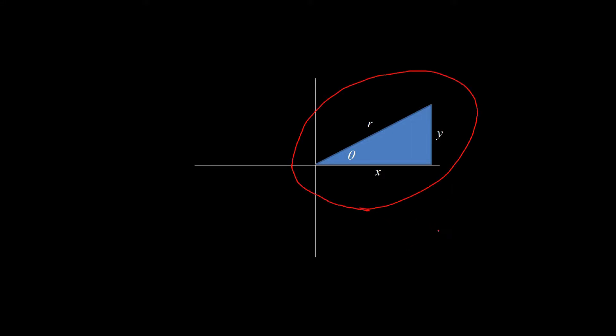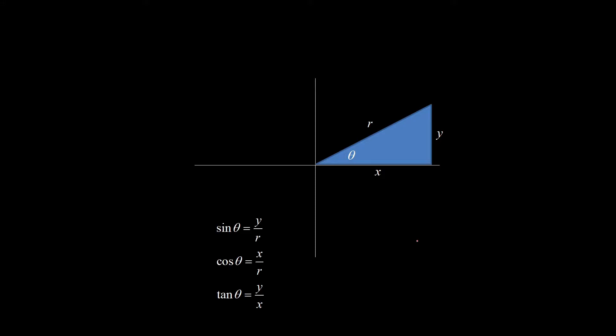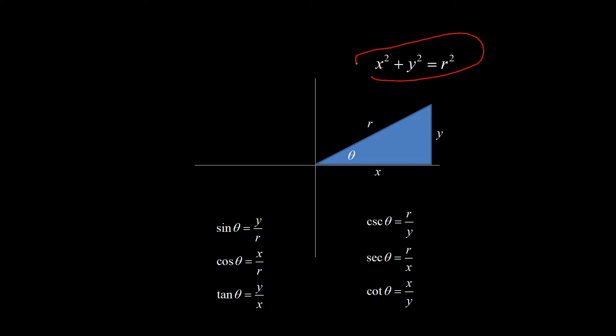This is commonly referred to as the standard setup. There's nothing in math that says it has to be this way, but it is a standard so that we can talk to each other and know what we're each referencing. With this standard setup, all the trig functions can be written in terms of x, y, and R. And of course, there's always the Pythagorean theorem hanging around.